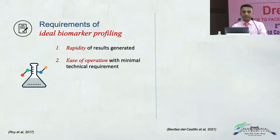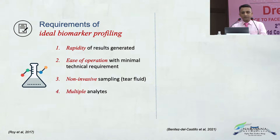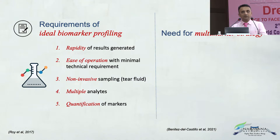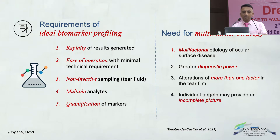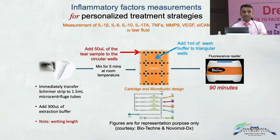The biomarker has to be rapid. It has to be quite easy to operate. It should be a non-invasive, tear film-based test. It should have multiple analytes so that it is not based on just one thing like an MMP9 kit. It should also have quantification and not just qualification — a positive or negative kind of result. With that multi-marker strategy, we come to a stage where we are looking at multifactorial etiology with great diagnostic power, and this is what brings us to what we call lab-on-chip.